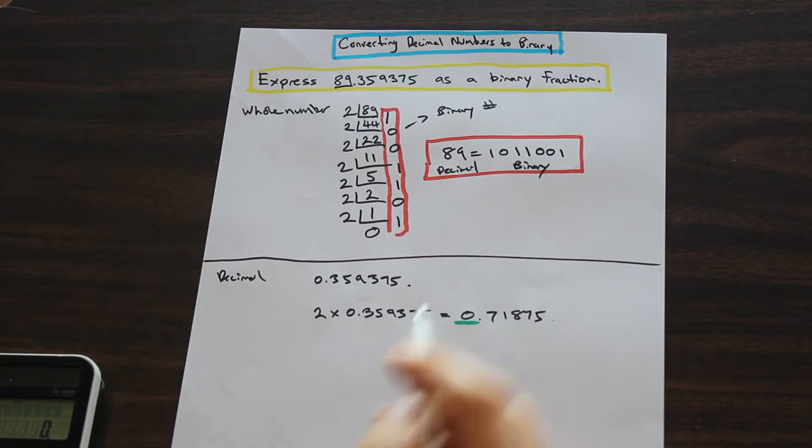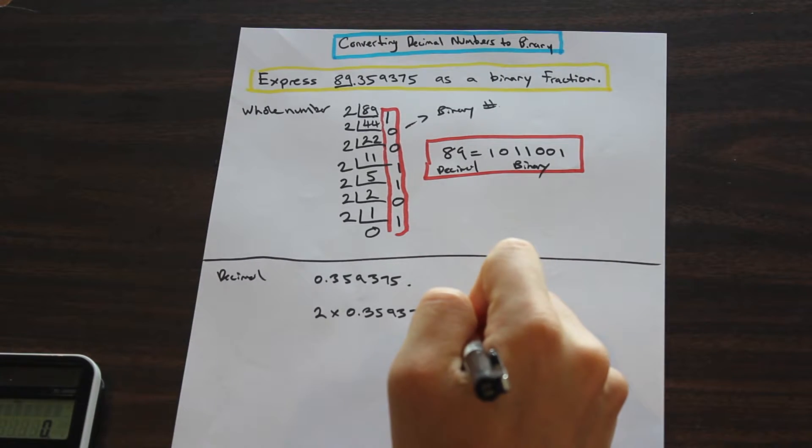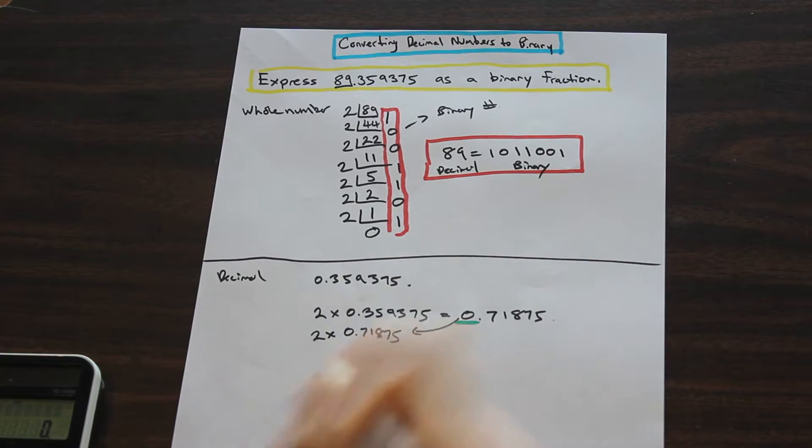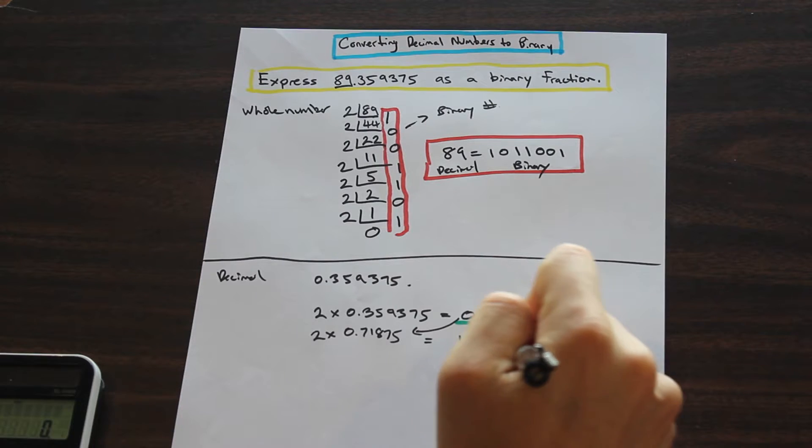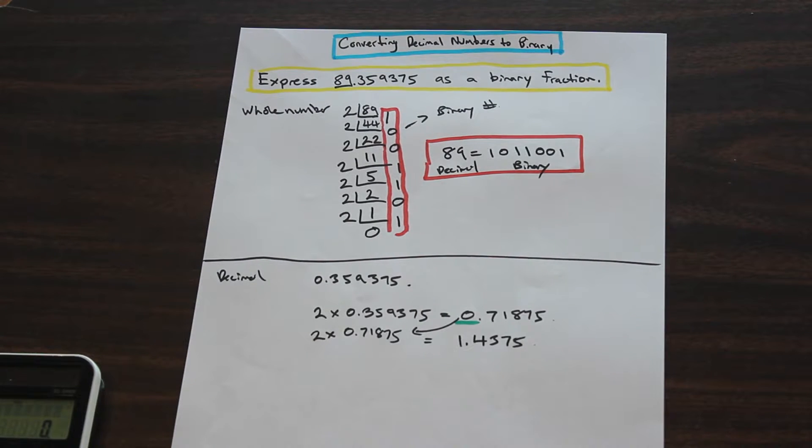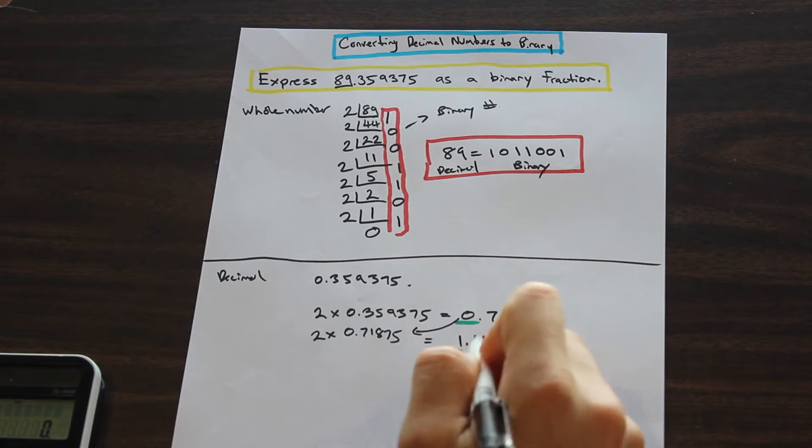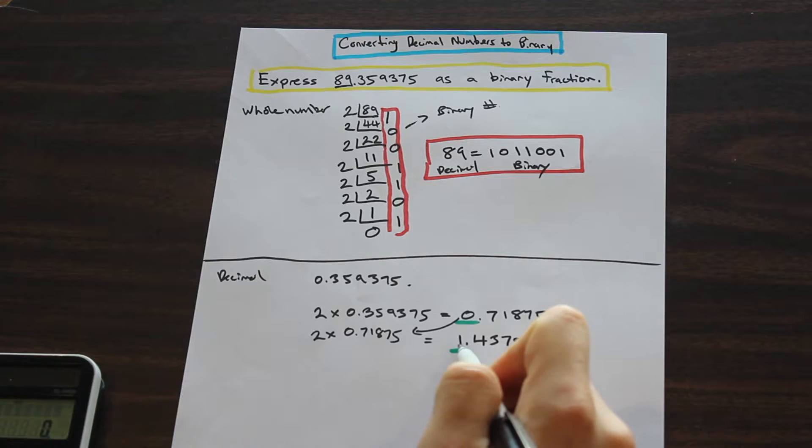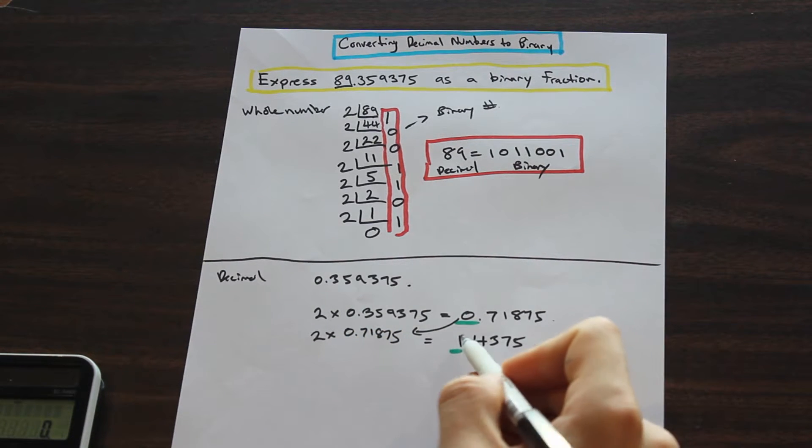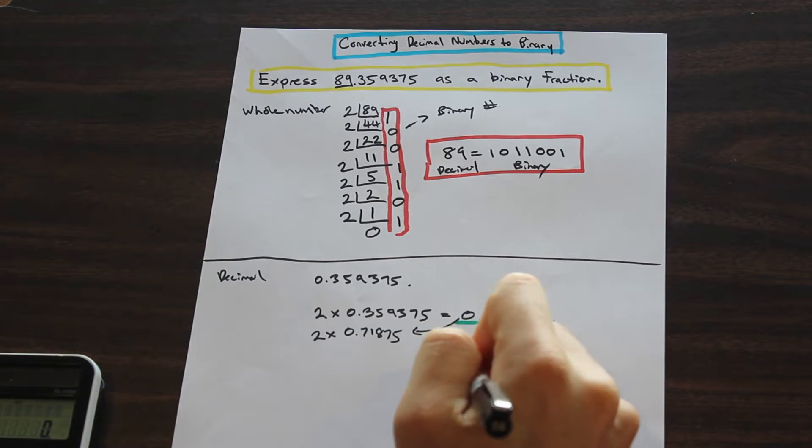Now what do we do? We're going to take this 0.71875 number, and we're going to move it down here. We're also going to multiply that by 2. What do we get from that? We get 1.4375. So we're going to reserve the number that we got, the whole number that we got from the result. And then we're going to take just the decimal portion. So for this part, you saw that this was 0. Now that we have a 1 in our result of 2 times 0.71875, we're going to ignore this 1. We're just going to take the decimal portion and move it down.